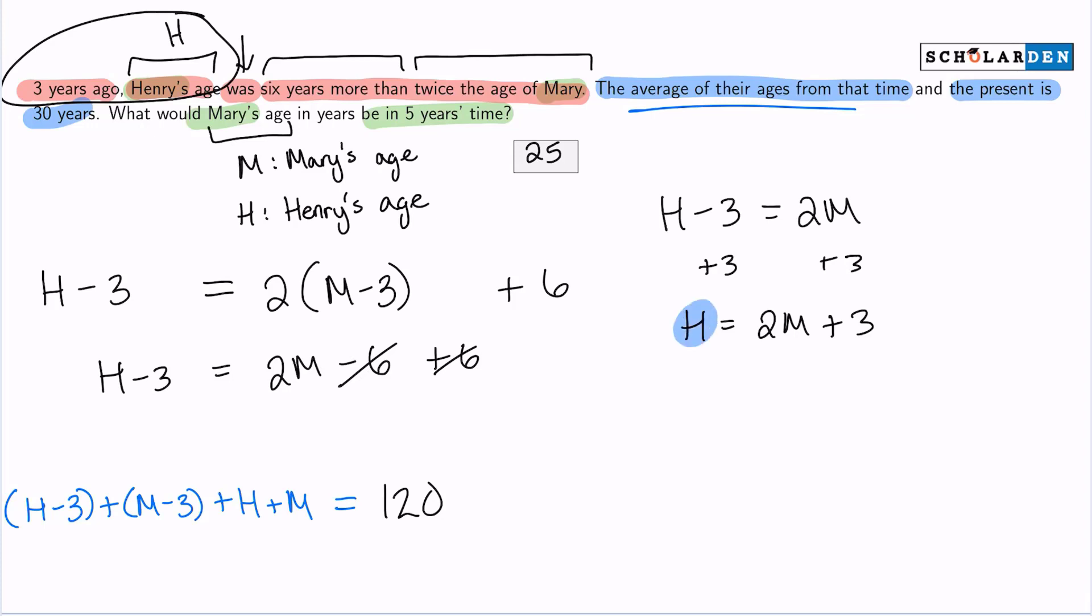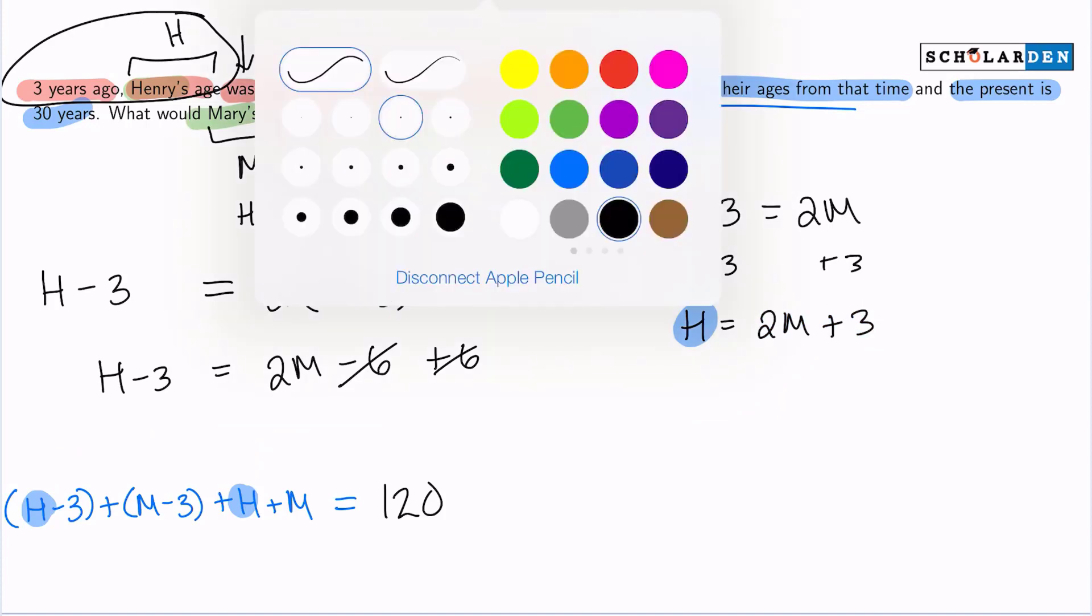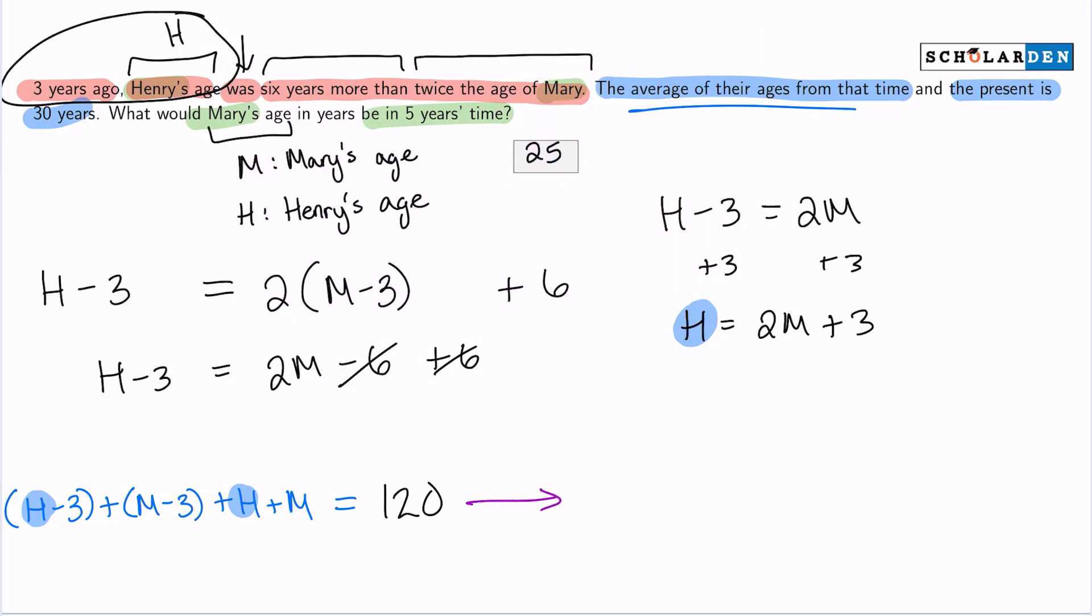So how can we use this? Well, this age also appears here and here, which means that two M plus three can be replaced into both of those terms. And that's exactly what I'll do. Substitution. And remember, folks, we are looking for Mary's age in five years, so we're looking for M plus five. That is what we're looking for.